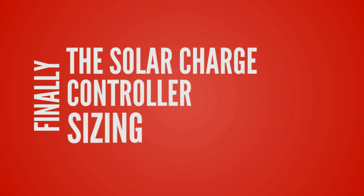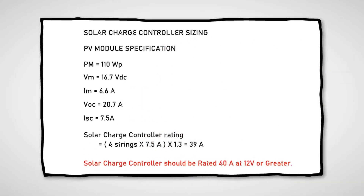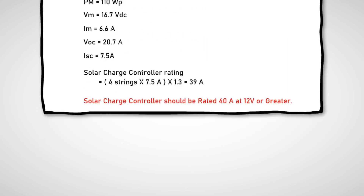Let's proceed now to the solar charge controller sizing. The solar charge controller is used to maintain the proper charging voltage on the batteries. It is typically rated against amperage and voltage capacities. In selecting the solar charge controller, it should match the voltage of the PV array and batteries, and you should identify which type of solar charge controller is suitable for your system. Make sure that the solar charge controller has sufficient capacity to handle the current from the PV array.